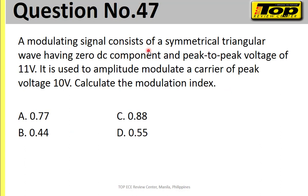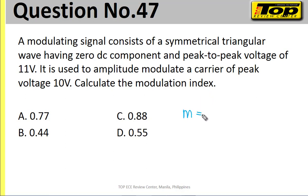Number 47. A modulating signal consists of a symmetrical triangular wave having zero DC component and peak-to-peak voltage of 11 volts. It is used to amplitude modulate a carrier of peak voltage of 10 volts. Calculate the modulation index. The modulation index for AM is VM over VC.